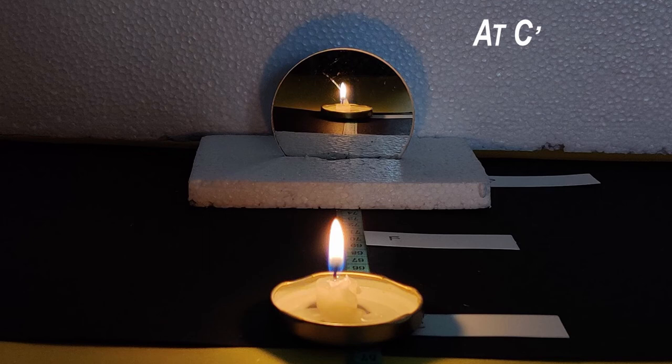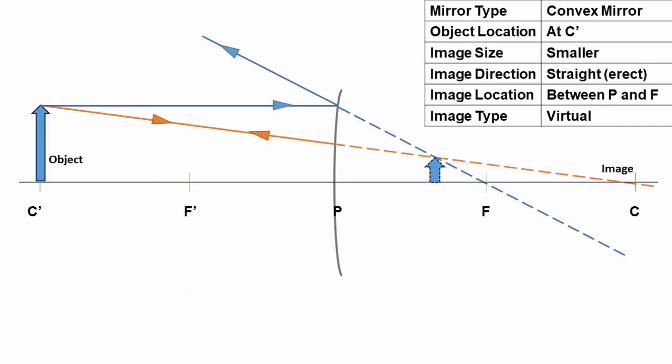Now move the candle to point C'. Move the white sheet of paper from point P towards point C' and beyond until a clear image of the candle flame is formed on the screen. You will notice again there is no clear image formed on the screen. But if you look into the mirror, an image of the candle is visible. Again, the blue and orange lines after reflecting travel away from each other and do not meet, so no real image is formed. However, if these rays are extended backwards, they meet to form an image inside the mirror. The image formed is smaller than the actual object, erect, and virtual in nature.